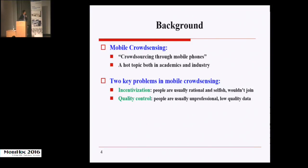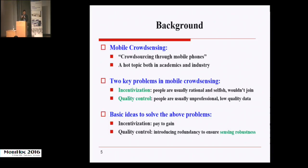The first problem is that users are usually rational and selfish, and they might not prefer to join the crowdsensing. The second is that users are usually untrusted, so the sensing data contributed may be of low quality. The basic idea to solve these problems is to pay the users to incentivize participation, and to introduce sensing redundancy such that data readings from multiple users can be fused to increase the robustness and quality.